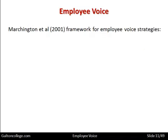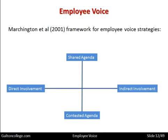Marchington in 2001 provided a framework for employee voice strategies. The framework has four parts: at the top, a shared agenda; at the bottom, a contested agenda; and then direct involvement and indirect involvement. With a shared agenda there is two-way communication — employers talking to employees, seeking opinions and making recommendations, while employees reciprocate with suggestions, refinements, and ideas to management. It is a two-way process and a shared agenda.